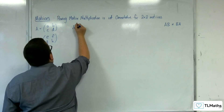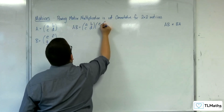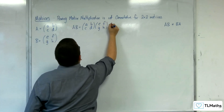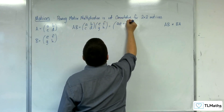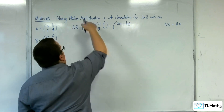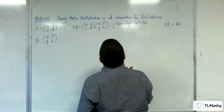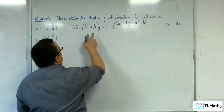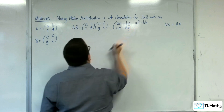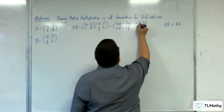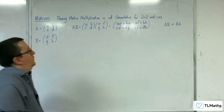So AB is ABCD times EFGH. We have AB times EG, so AE plus BG. Then AB times FH, so AF plus BH. CD times EG, so CE plus DG. And then CD times FH, so CF plus DH. So that's AB.